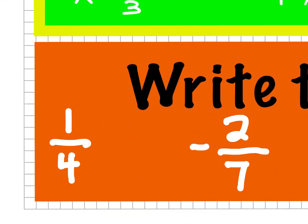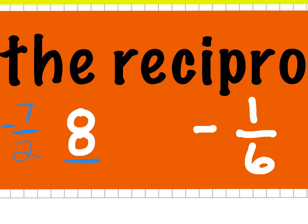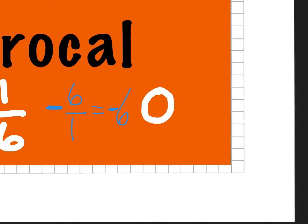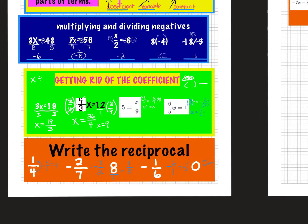Reciprocals are just the upside-down fraction. You keep the sign and just flip it, because they multiply together to make positive 1. So 4 over 1 becomes 1 fourth. Negative 7 halves keeps the same sign, so the reciprocal is negative 2 sevenths. 8 has an imaginary 1 on the bottom, so its reciprocal is 1 eighth. Negative 1 sixth keeps the same sign, giving negative 6. And 0 — is there anything we can multiply by 0 to get 1? No, so 0 has no reciprocal.